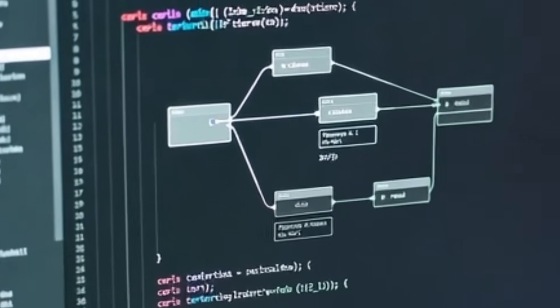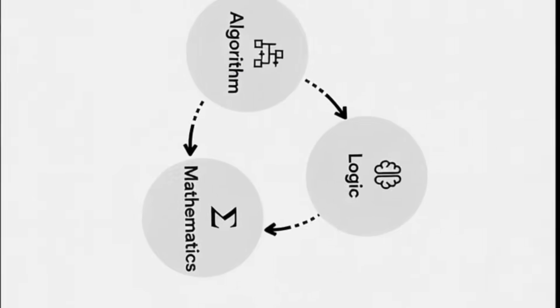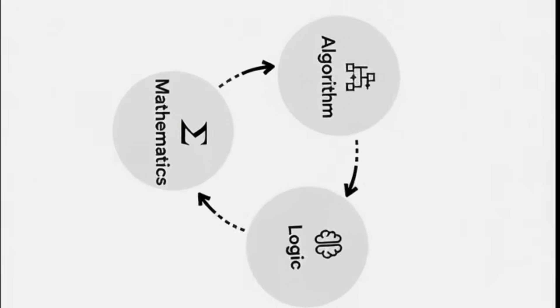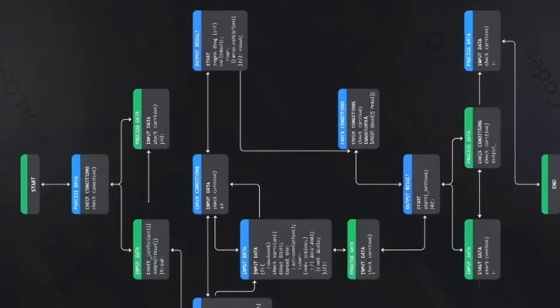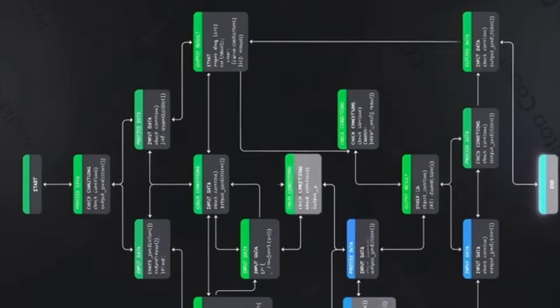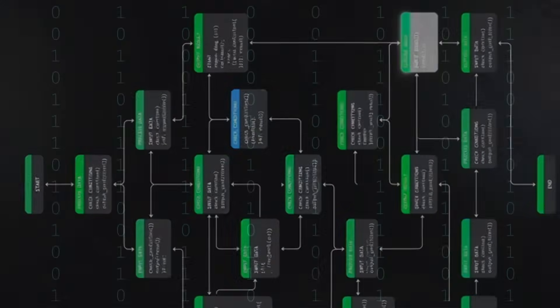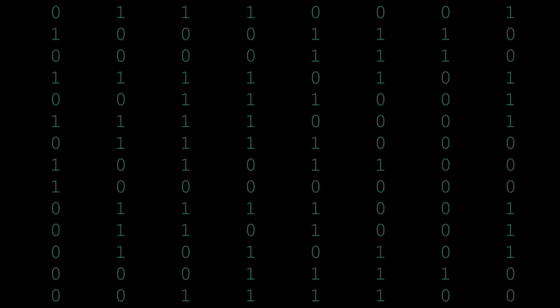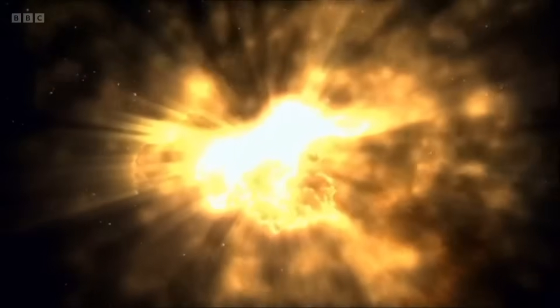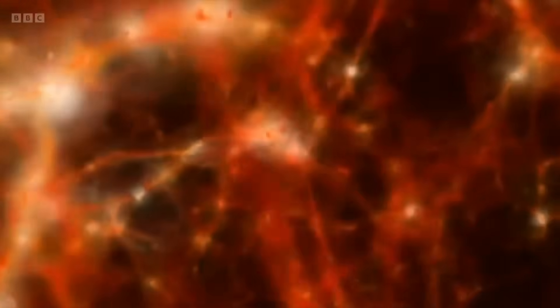As we know any logical system, any computer, any mathematics, any simulation will always contain truths that it cannot compute. This means a simulation cannot simulate every truth inside itself, a computer cannot compute certain outcomes, a logic-based universe cannot contain all truth, and some parts of reality are fundamentally beyond algorithms.